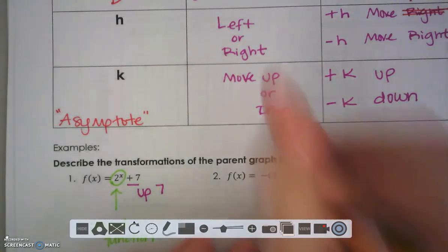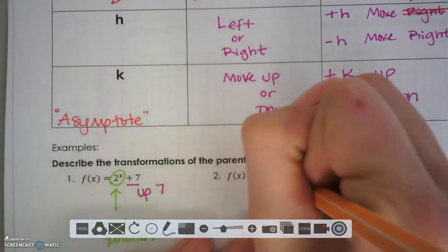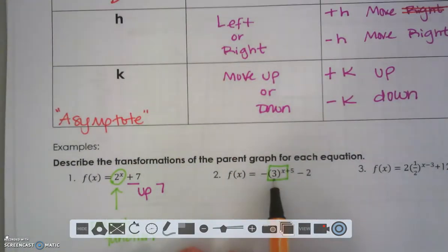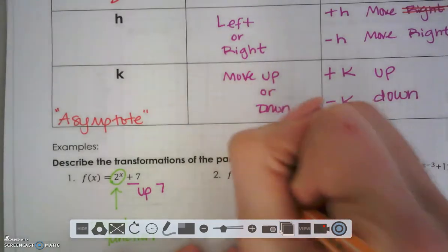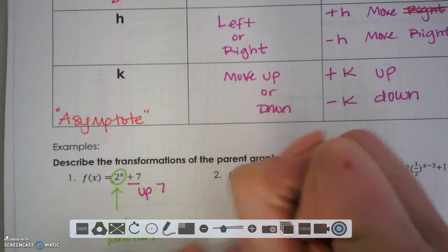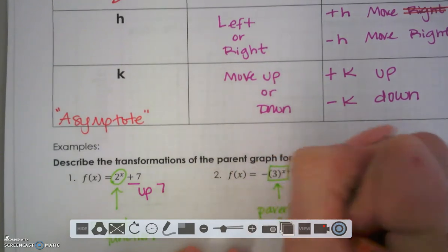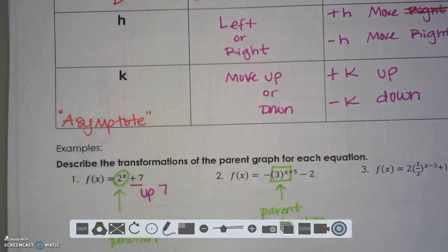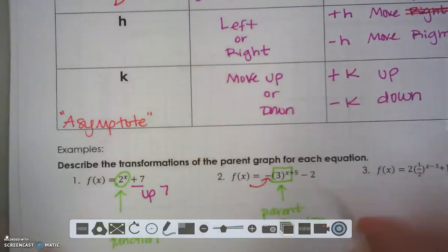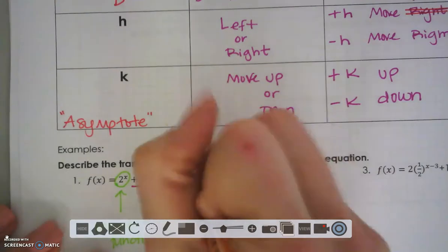In number 2, your parent function is 3 raised to the X. That's a base with the exponent. So this is my parent function. This negative is in that A spot. And we know negatives in the A spot should be a reflection.